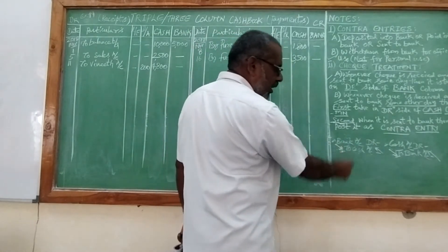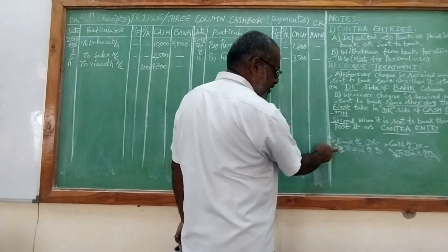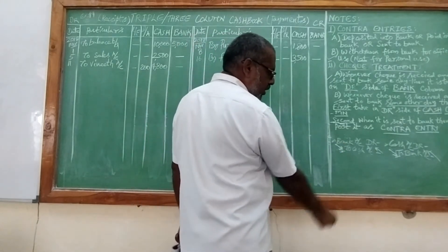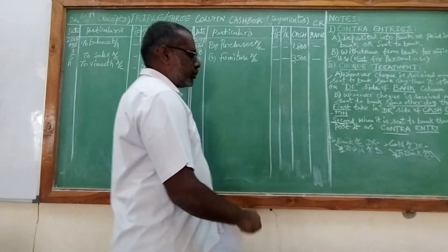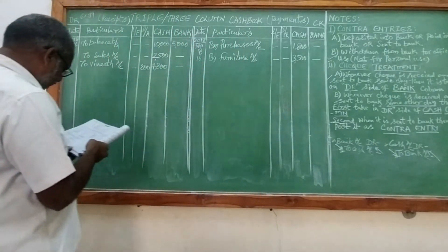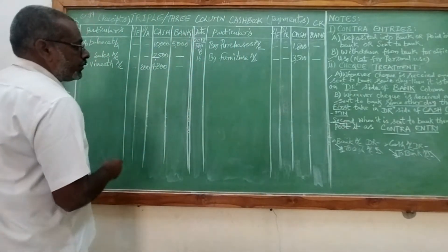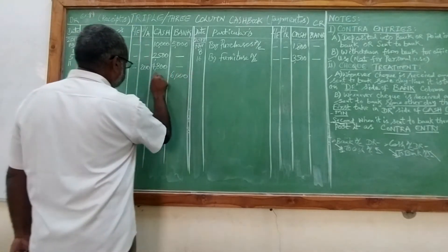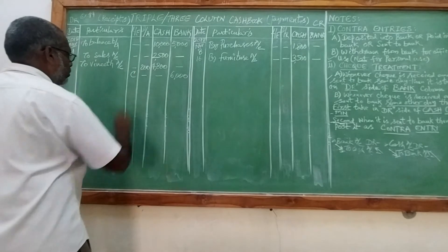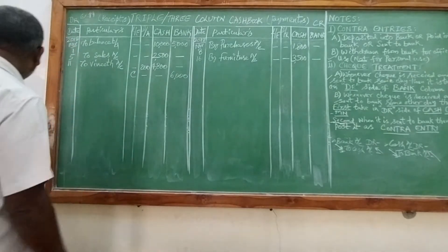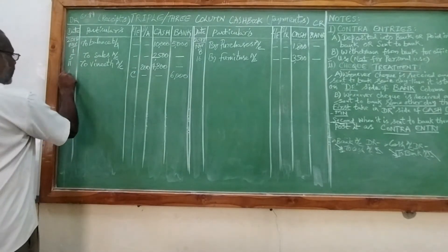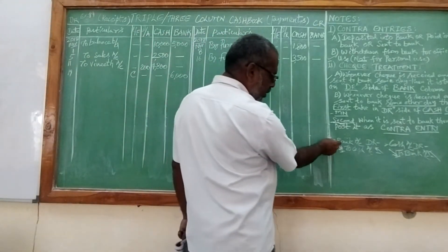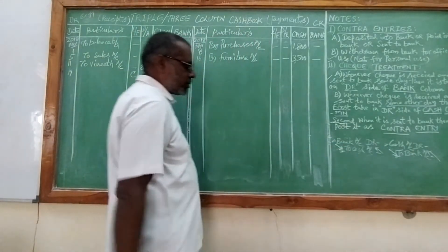Put the journal entry in the working notes and make an extra posting. For deposit in the bank: bank is the receiver, we are giving cash. So I will take it on the debit side of bank — 6,000. The LF column shows C, which denotes contra. For the particulars on the bank debit side, the opposite is cash.